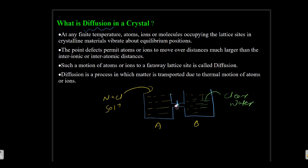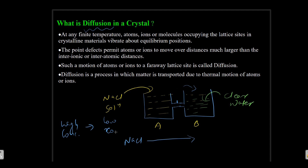When the stopper was removed and the two liquids were allowed to mix, sodium chloride concentration started to increase in B and decrease in A. That means sodium chloride moved from a higher concentration region to a lower concentration region. The movement of matter from a high concentration region to a low concentration region is called diffusion.